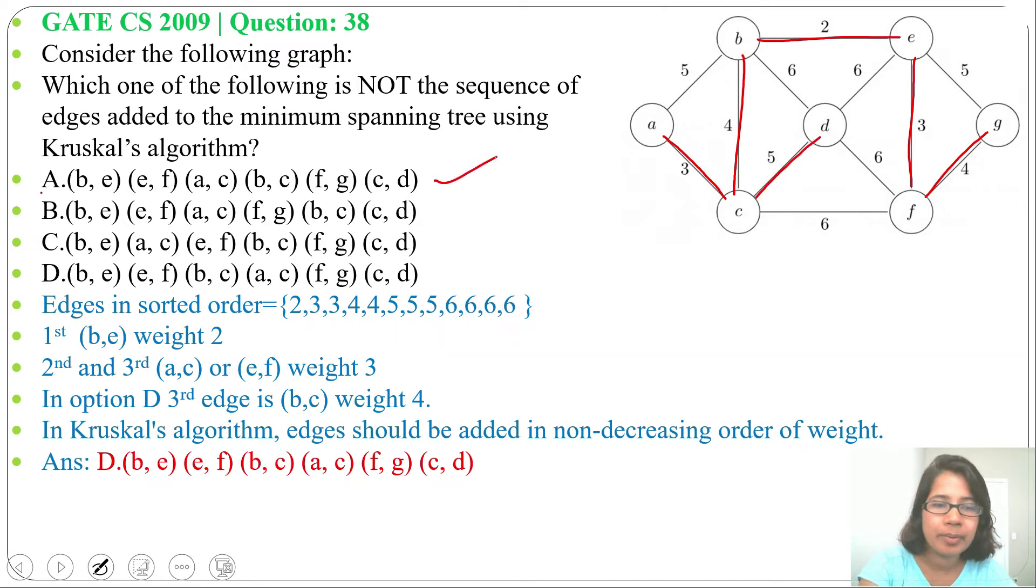Next in option B, BE, EF, BC - here these two are altered, both weight is 4. FG and BC, both are altered, so this is also minimum spanning tree by using Kruskal's algorithm.